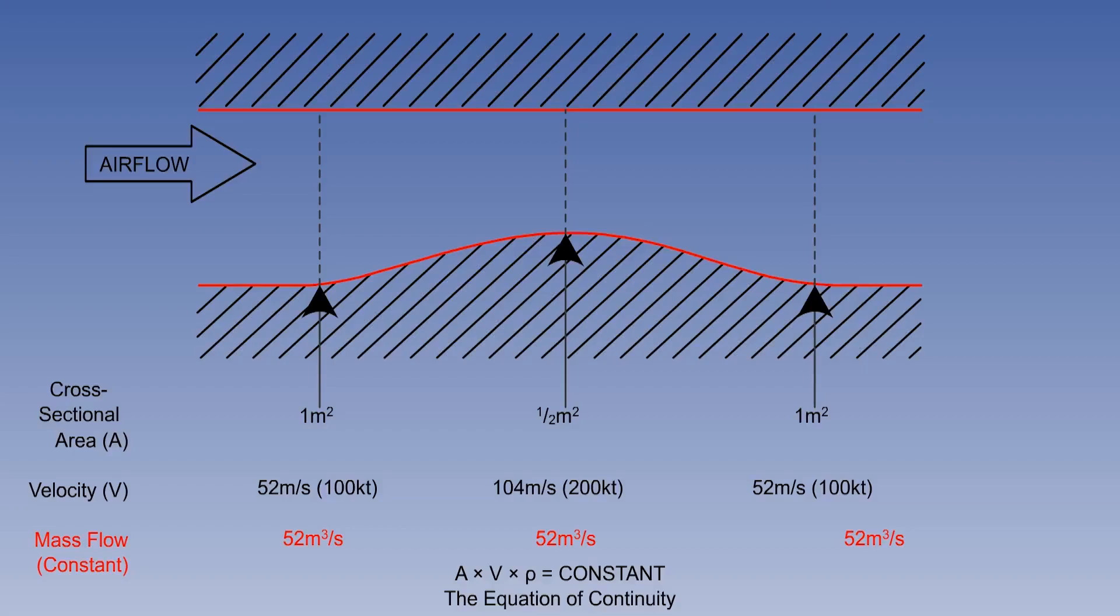The equation of continuity enables the velocity changes of air flow around a given shape to be predicted mathematically for speeds below Mach 0.4, which is around 260 knots at sea level.